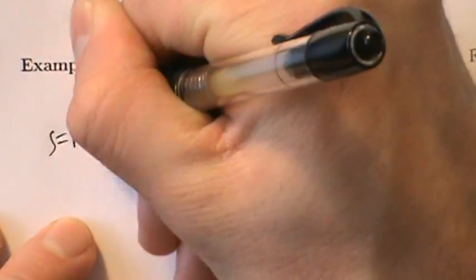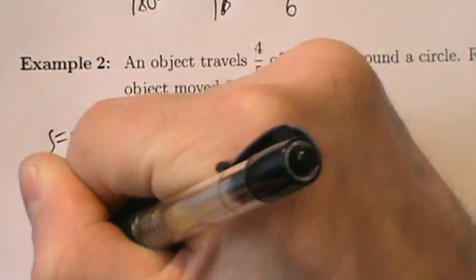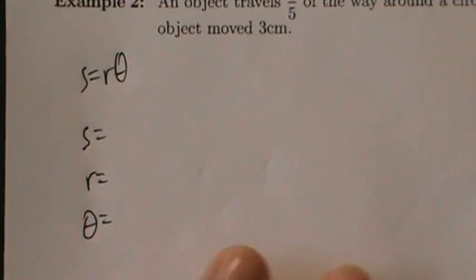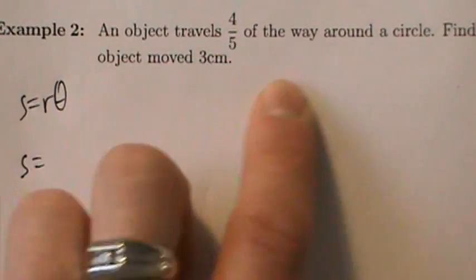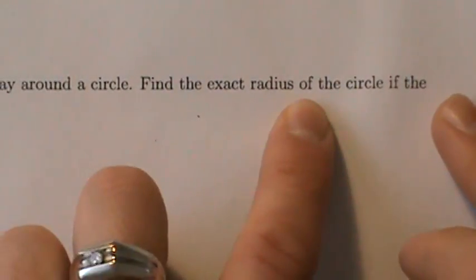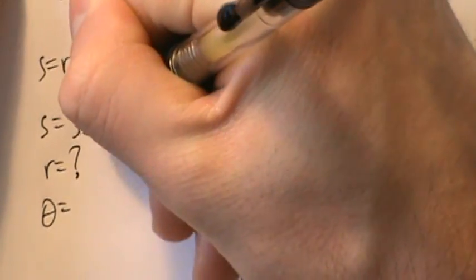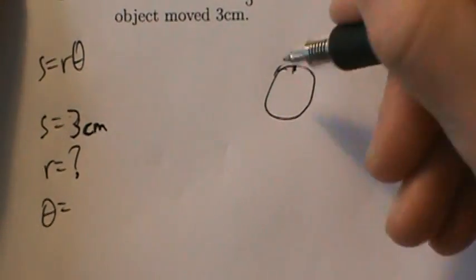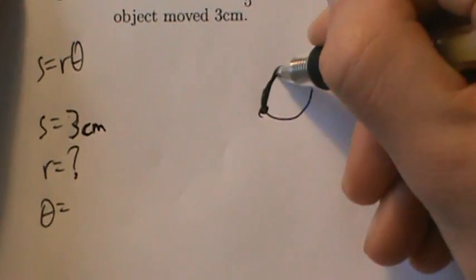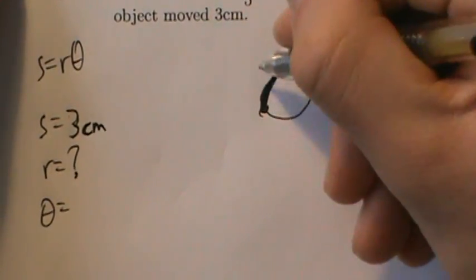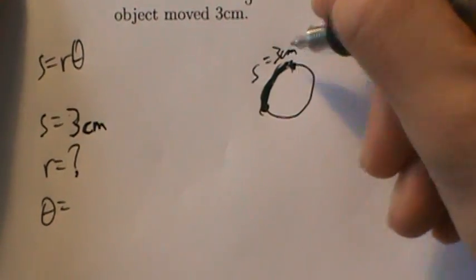Write down the formula: s = r*theta, then s = , r = , theta = . The object travels 4/5 of the way around a circle — that part is a bit tricky, so let's keep reading. We're looking for the radius, so r is the unknown. We're told the object moved 3 centimeters. If we imagine this object moving around a circle, it will have moved 3 centimeters — so that's actually the arc length. So s = 3 centimeters.